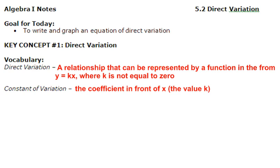Today we're going to be looking at 5.2, direct variation. Our goal for today is to write and graph an equation of direct variation. The vocab is: direct variation is a relationship that can be represented by a function in the form y equals k times x, where k is not equal to zero. The constant of variation is the coefficient in front of x, so that's the value k. For all of these problems, we're going to be using this equation: y equals k times x.